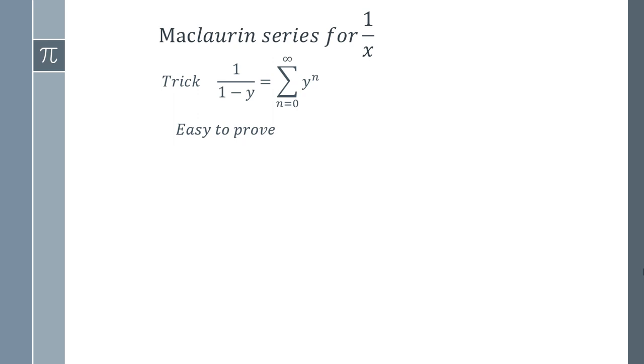But assuming that you're happy with this series, we can actually manipulate this and end up with the series for 1 over x very simply. So the first step is that we're going to let y equal 1 minus x.